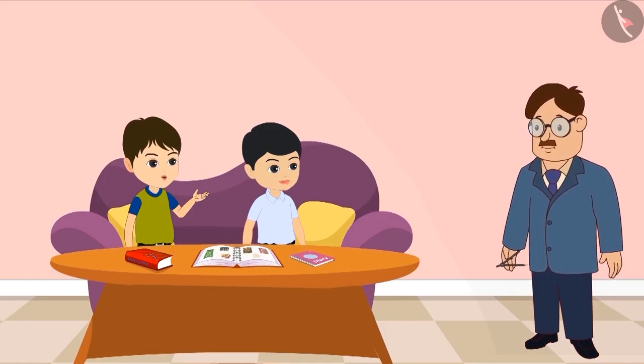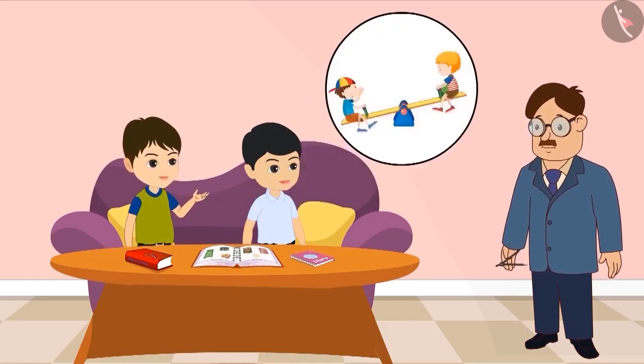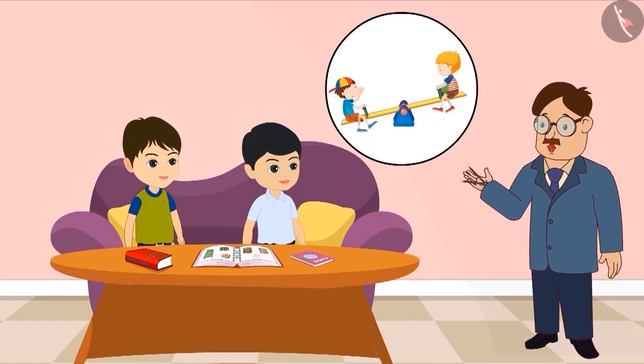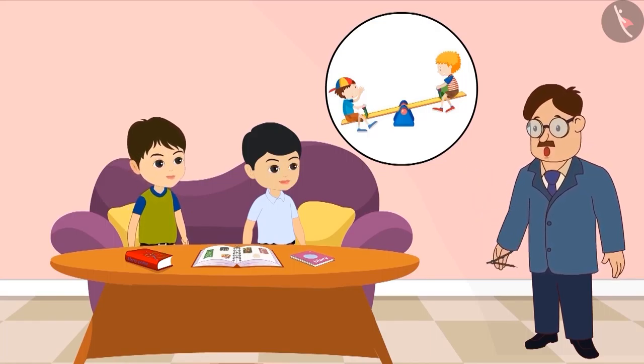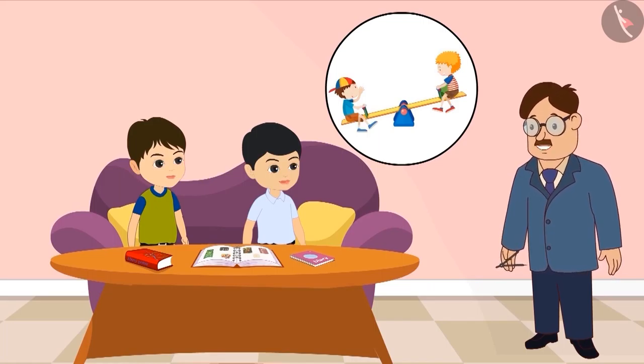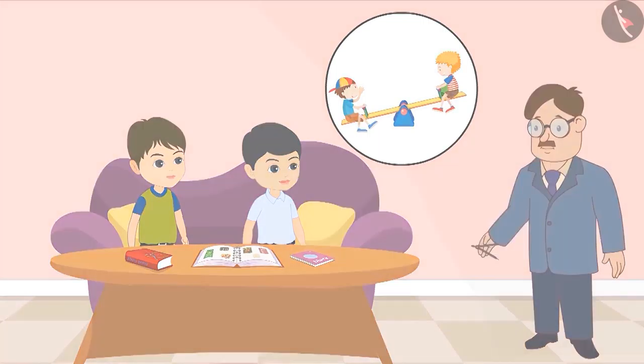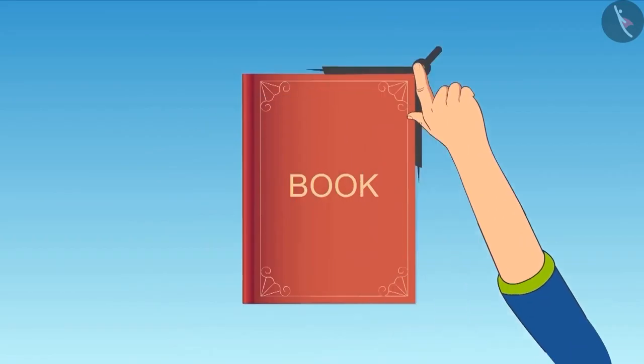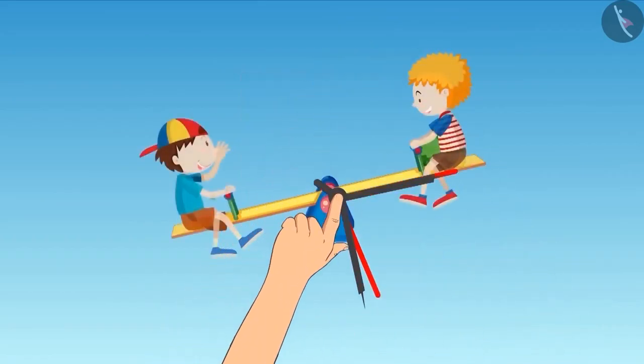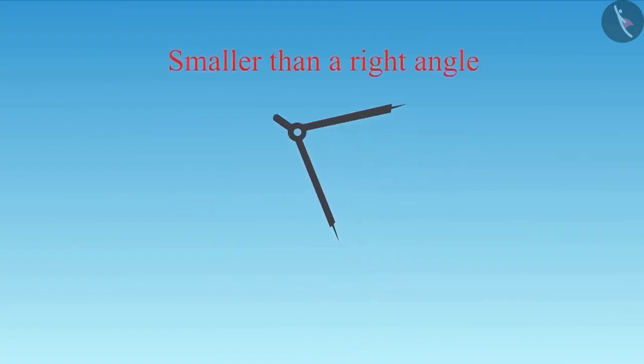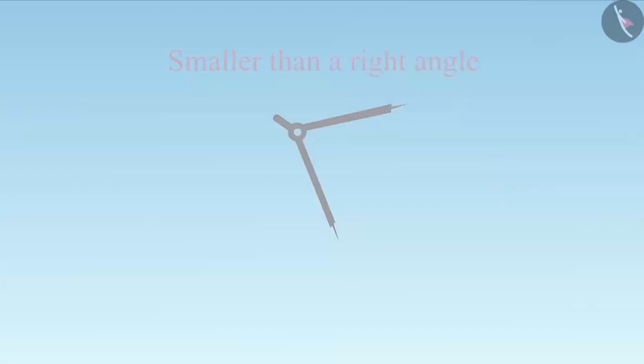So, can we identify the angle of the seesaw given in this picture with the help of this divider? Yes, why not? To identify the angle in this picture, we will place the divider this way. See, the divider was as open as the measurement of the right angle before. Then, to measure this angle, we had to slightly reduce the distance between the two sides of the divider. This means that this angle is smaller than a right angle.